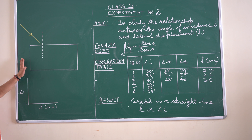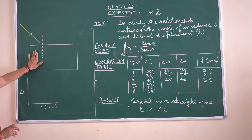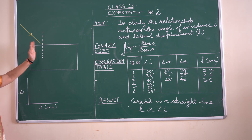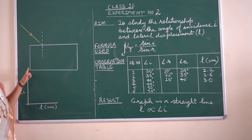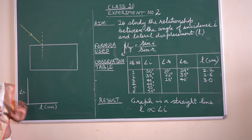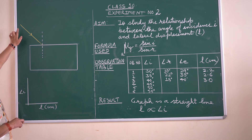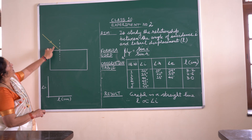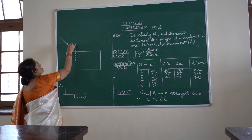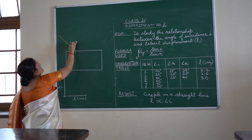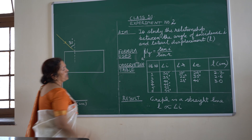You are going to take a plain sheet of paper and then draw a normal 90° line about two centimeters away from the corner of the glass slab. The glass slab outline is drawn on the plain sheet of paper, and you will draw a ray incident on the glass slab making an angle of incidence — let's say 30°, which is the first reading.